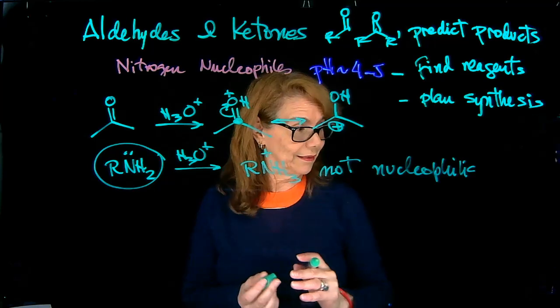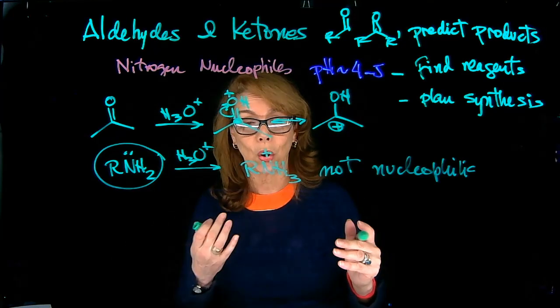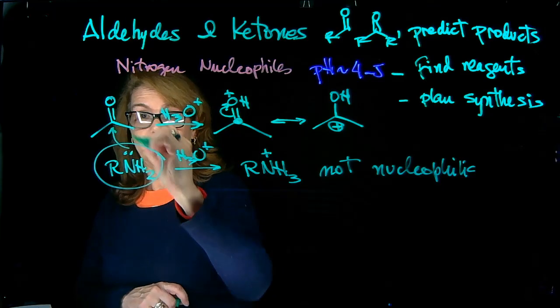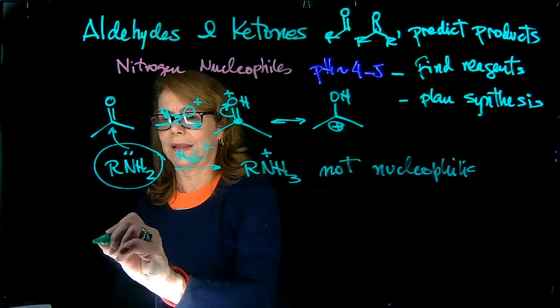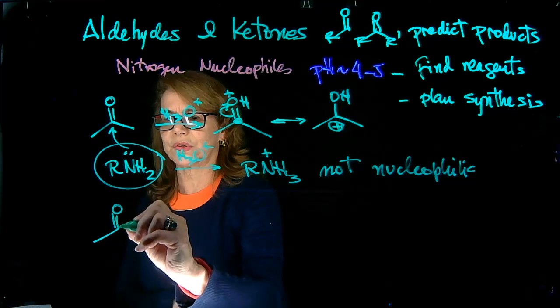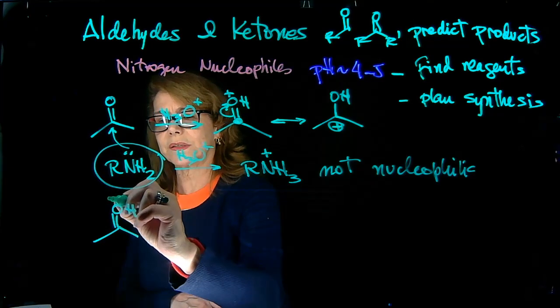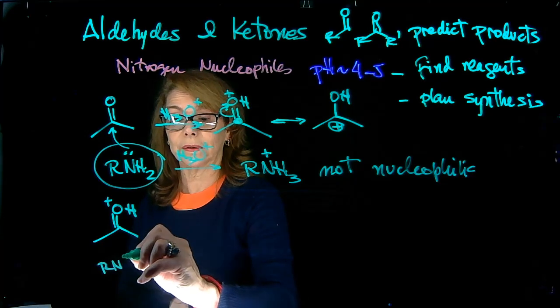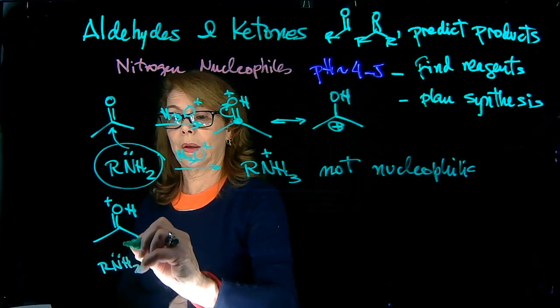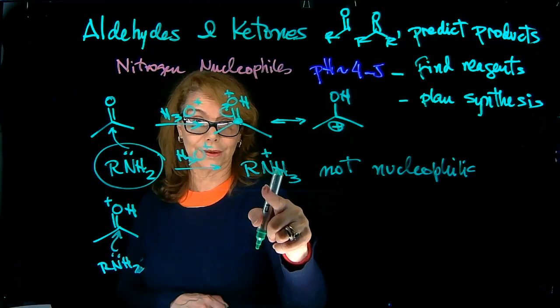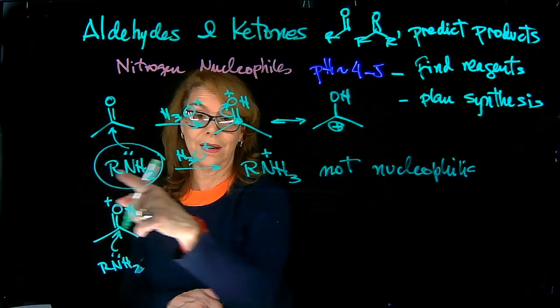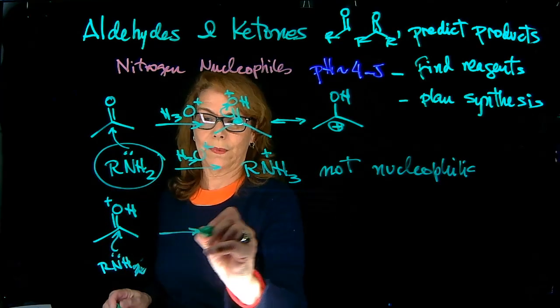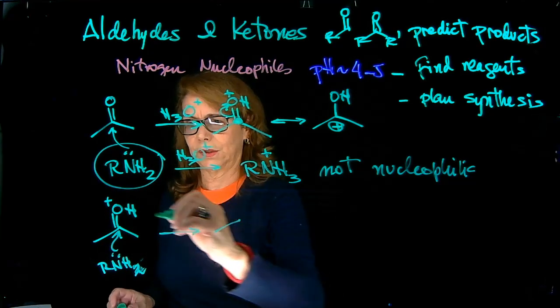So in different books, you will see mechanism involving direct attack here. Or you will also see the alternate mechanism. So we can do that, or we can have this species, the carbon is more electrophilic, but the nucleophile is still the same. Remember that this species is not nucleophilic. This is a nucleophile. That's why we cannot make it too acidic.